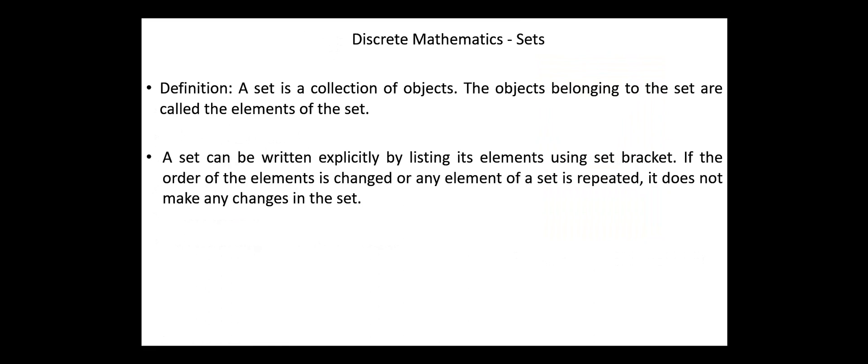A set is defined as a collection of objects. The objects belonging to the set are called the elements of the set. In most applications, the elements of the set have the same properties. For example, a set of integer numbers, a set of cities, a set of animals, etc. A set can be written explicitly by listing its elements using set brackets. For example, the set A equals {1, 2, 3}.